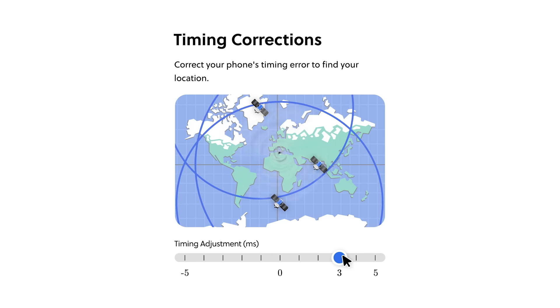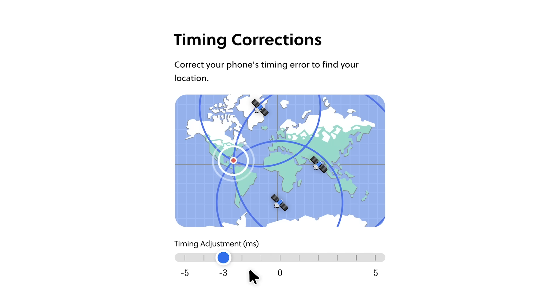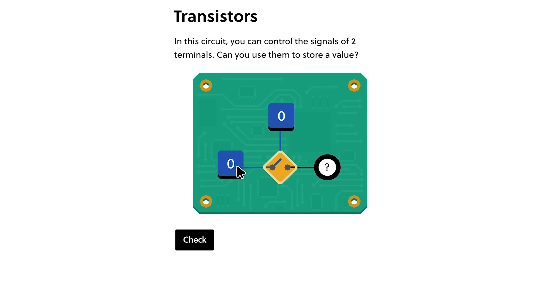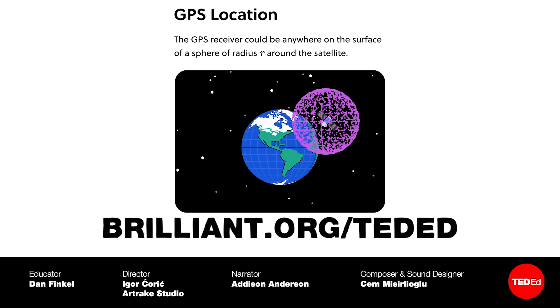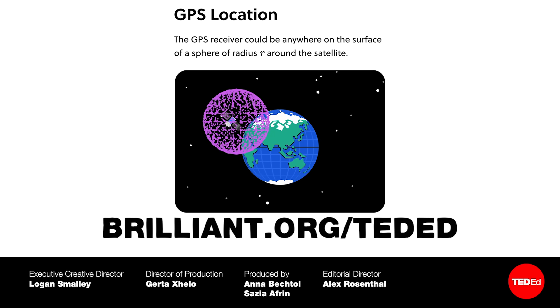Treat yourself to the gift of learning with Brilliant.org. Brilliant's interactives allow you to learn by doing, and with thousands of STEM lessons, you're sure to find something that appeals to you. Visit Brilliant.org slash TedEd for 30 days free and 20% off an annual subscription.